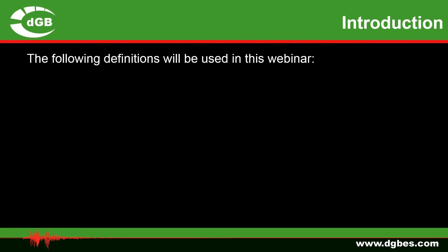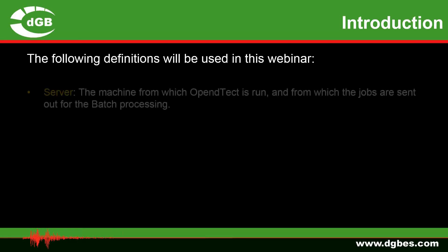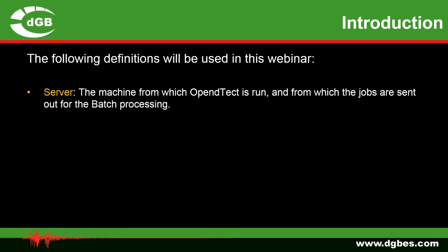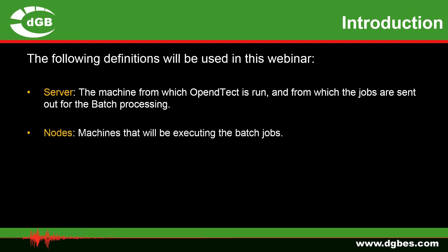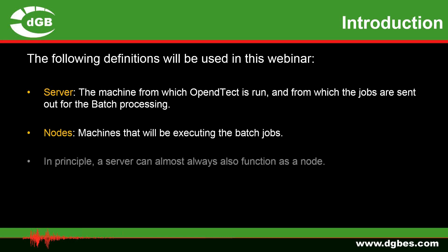We're going to use these definitions in the webinar as we go on. The server is referred to as the machine from which OpenDTec is run and from which the jobs are sent out for batch processing. The nodes are the machines that will be executing the batch jobs. In principle, a server can almost always function as a node.